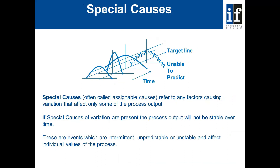The second type of variation is special cause variation, often called assignable causes. Quite often it is obvious to the people closest to the process what the reasons for the problem are. If special cause variation is present, the process output will not be stable over time. These are events which are intermittent, unpredictable or unstable and affect individual values of the process. To improve performance, we take what is known as local action — action taken by people closest to the process, such as the operator.